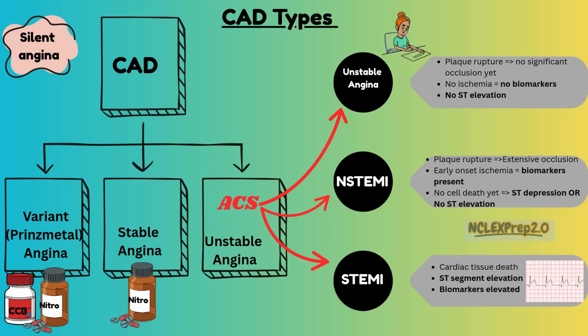Stable angina — the patient will present with crushing chest pain or discomfort that is predictable. It typically occurs with physical exertion or stress and is relieved by rest and/or sublingual nitroglycerin.